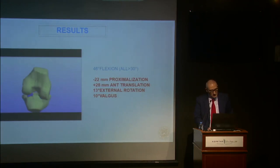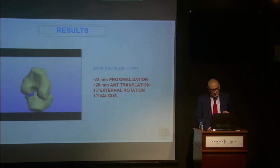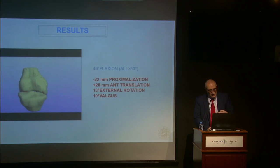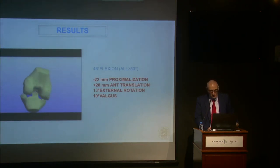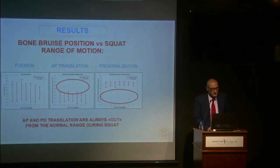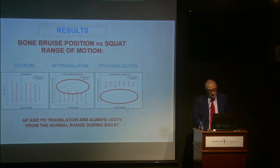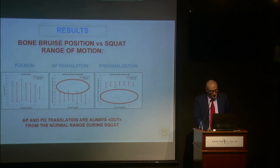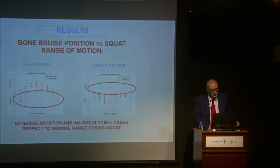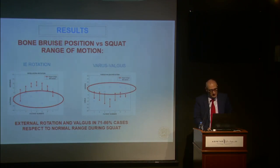This represents a true subluxation of the joint when the ACL injury happens, but this is probably after the ACL is already rupturing. During range of motion evaluation, the anterior-posterior and proximal distance translations were always outside the normal range during the squat. The external rotation and valgus were outside normal range in 71–86% of cases during the squat.